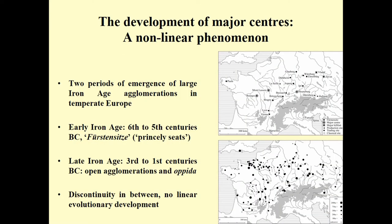I'm particularly focusing on Central Western Europe. In this area during the Iron Age in the first millennium BC, we have two different periods of emergence of large agglomerations. An important point is that there is no continuity between these two stages. The first period is mostly in the sixth and fifth centuries BC, where we see the emergence of some large settlements — the so-called Fürstensitze or princely seats — with some sites that could reach up to 100, or even in the case of one site, 200–300 hectares.